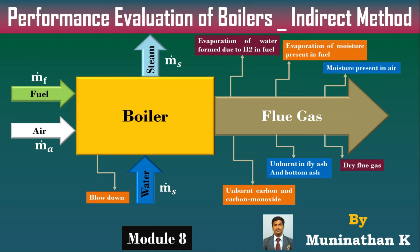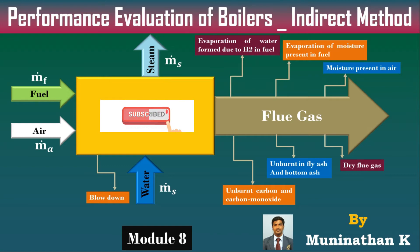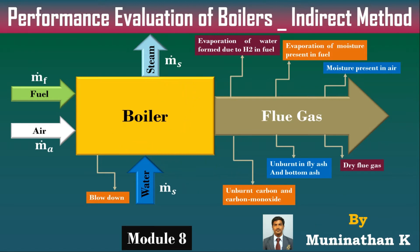In the direct method, the efficiency of the boiler is calculated using output divided by input — that is, mass of steam generated divided by the amount of heat given to the boiler. This method is very simple and easy to find out the efficiency of the boiler because only a few parameters are required. But the major disadvantage of this method is it does not give any clue to the operator as to why the efficiency of the boiler is lower, and sometimes it can mislead the operator. This is the major disadvantage of the direct method.